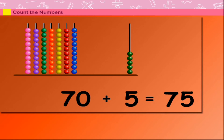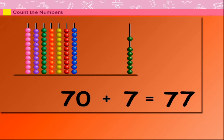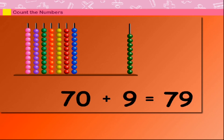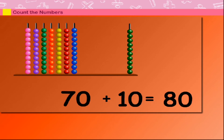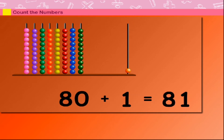70 plus 6 is equal to 76. 70 plus 7 is equal to 77. 70 plus 8 is equal to 78. 70 plus 9 is equal to 79. 70 plus 10 is equal to 80.